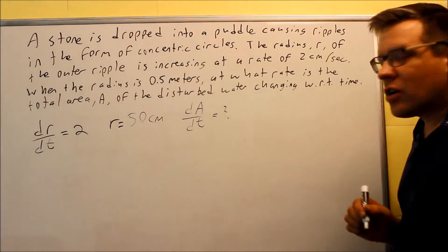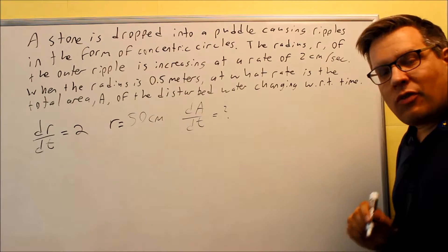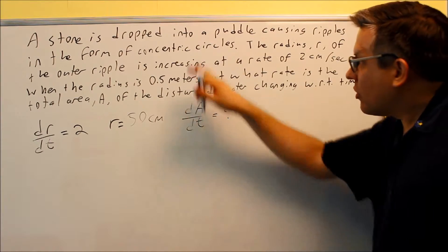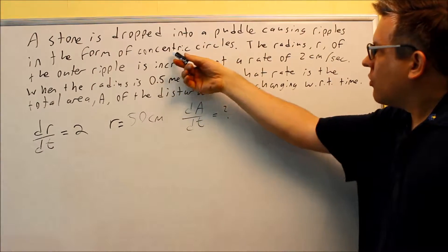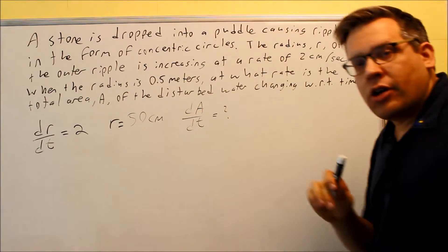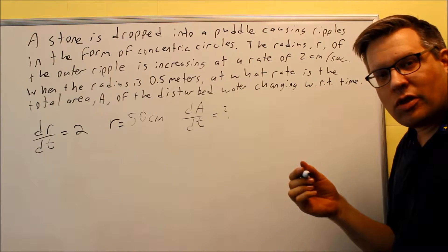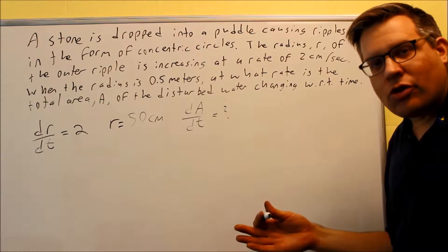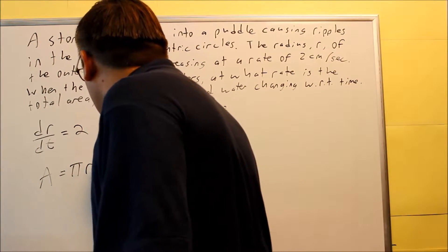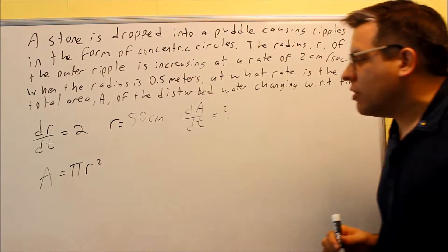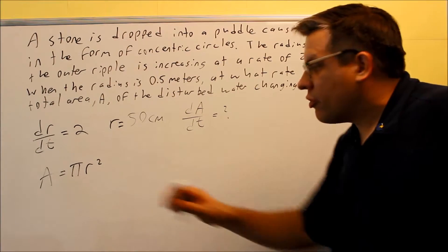Now we need to figure out what formula we're going to use here to take the derivative of both sides with respect to time. Sometimes they give you the formula, a lot of times they don't. The problem says ripples in the form of circles and we want area, so we need the area of a circle. Your area is πr². This is the main formula I'm going to be working with when I take the derivative of both sides using implicit differentiation.